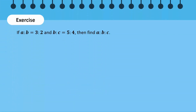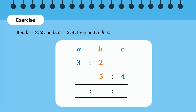Time for an exercise. If A to B is equal to 3 to 2, and B to C is equal to 5 to 4, then find A to B to C. First, we write the two ratios such that the numbers corresponding to the common member are written one on top of the other.